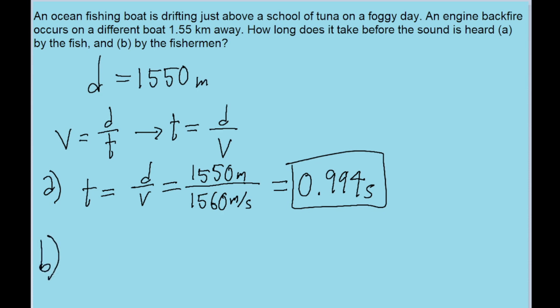Now, for b, we're going to use the same formula, t equals d over v, except the speed now is the speed of sound in the air. So the distance value is going to be the same, we're assuming, but we're going to use 343 meters per second for the value of the speed of sound. And if we put this in our calculator, then we find a time of about 4.52 seconds.